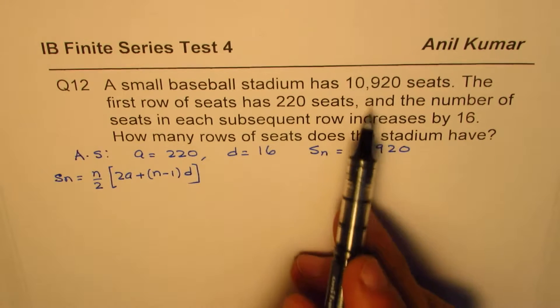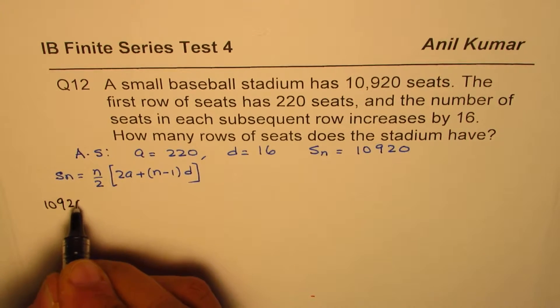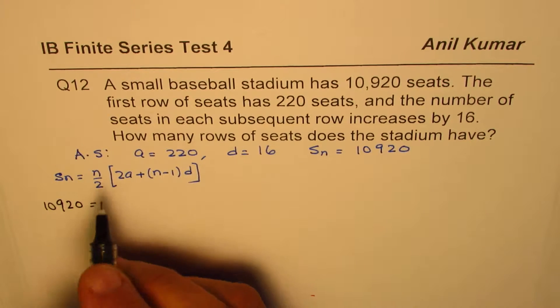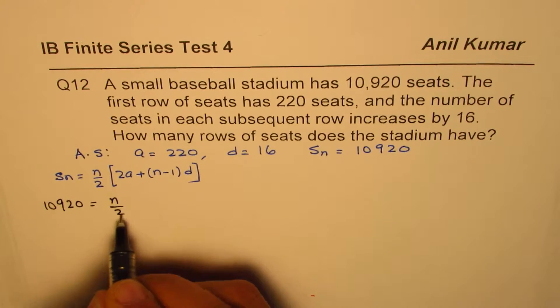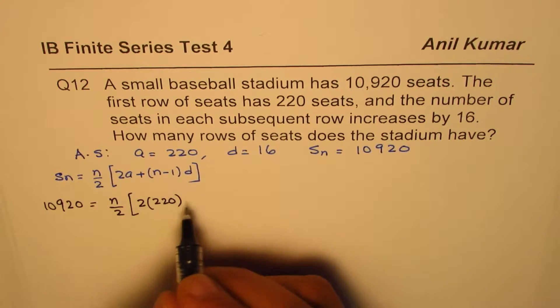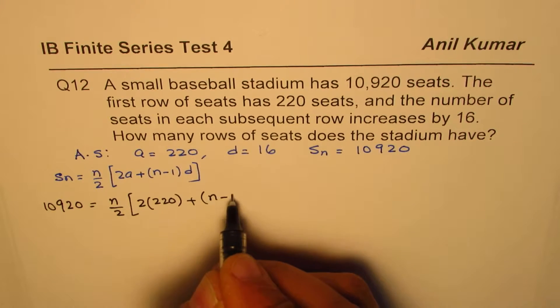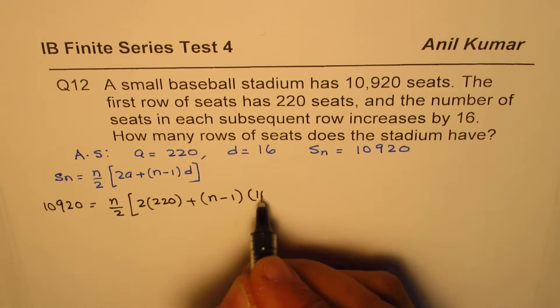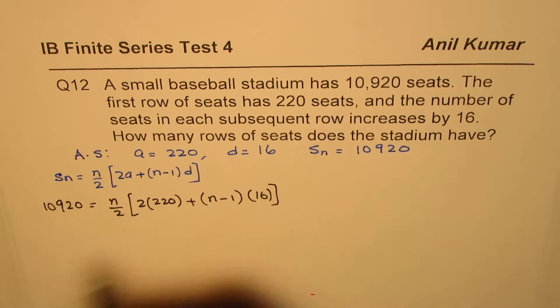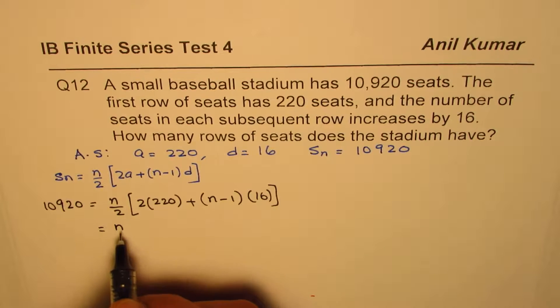Total number of seats is 10,920. Let me write down that here 10,920. We need to find n. So we'll just keep it as such. 2 times a is 220, substitute whatever you know. And here we have n minus 1 times d is 16. That's what we have.